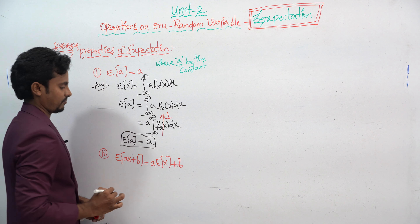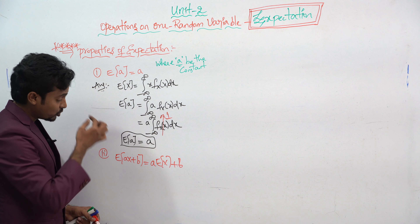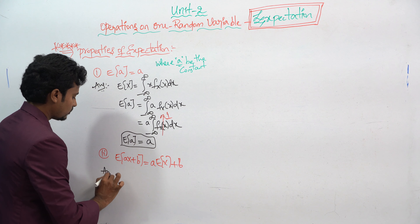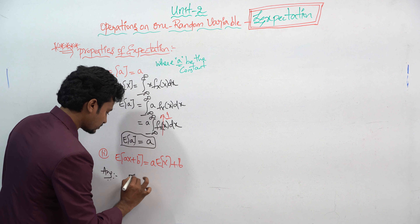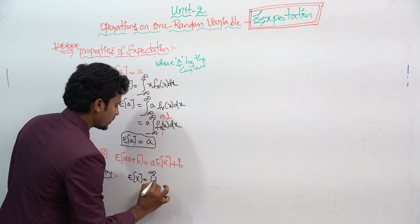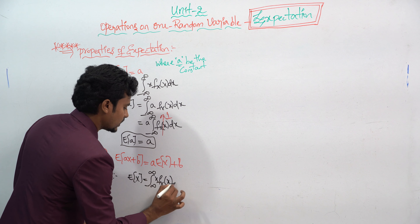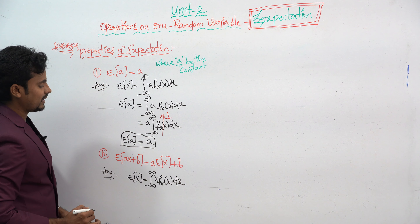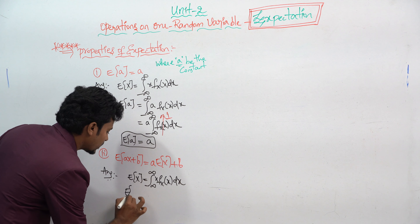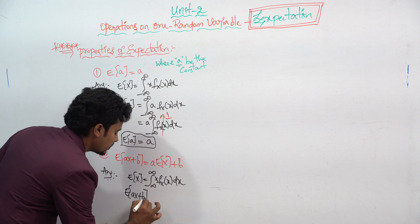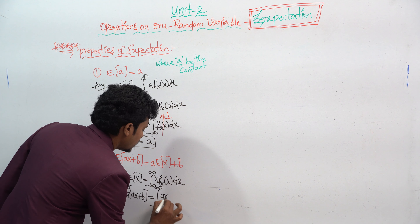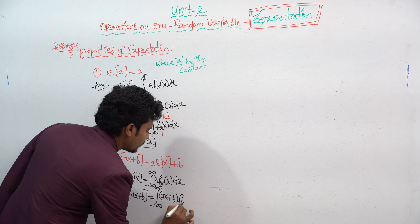Now let's see another property: E(ax + b) = a·E(x) + b. We have to prove this. The formula is E(x) = integration from minus infinity to infinity of x times f(x) dx. In this case, we replace x with ax + b.